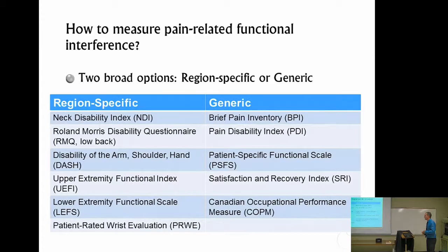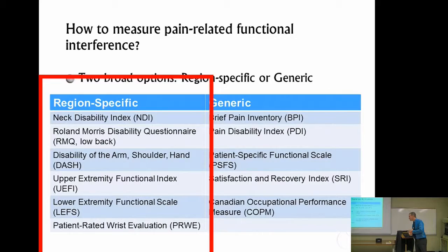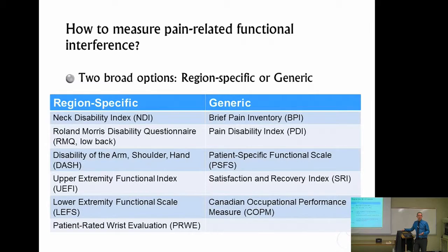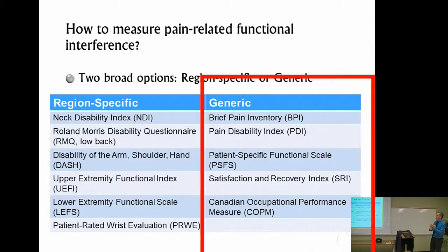Some examples of region-specific scales include the Neck Disability Index, the Roland Morris for low back disability, the DASH — Disability of the Arm, Shoulder, and Hand — the Upper Extremity Functional Index, the Lower Extremity Functional Scale, and the Patient Rated Wrist Evaluation. For generic scales, we have the Brief Pain Inventory, the Pain Disability Index, the Patient Specific Functional Scale, the Satisfaction Recovery Index, and the Canadian Occupational Performance Measure, among others.